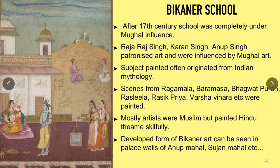Raja Raj Singh, Karan Singh, and Anoop Singh patronized art and were highly influenced by Mughal art. The subjects painted often originated from Indian mythology, seen from Ragmala, Bara Masa, Bhagwat Puran, Ras Lila, Rasik Priya, Varsha Vihar, and others were painted.